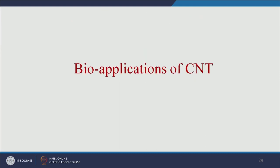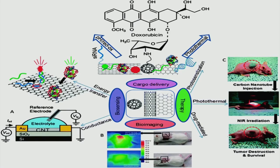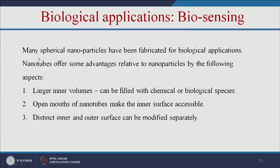Let us see the various applications of carbon nanotubes. Carbon nanotubes can be useful for bioimaging, drug delivery, biosensing, and therapeutic or theranostic applications. Nanotubes offer advantages over nanoparticles in that they have larger inner volumes that can be filled with chemical or biological species such as drugs or imaging agents. Their open mouths make the inner surface accessible, and distinct inner and outer surfaces can be modified separately.